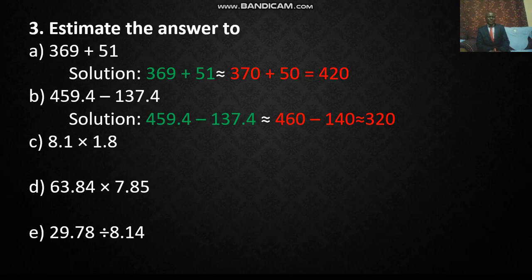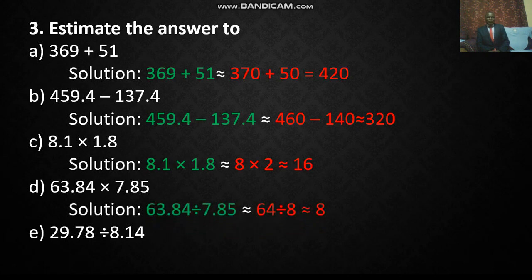Then we have 8.1. So in this case 8.1 becomes 8, 1.8 becomes 2. When you multiply you get approximately 16. Then the one that follows, we again approximate. That is, we estimate 63.84 becomes 64. Then 7.85 becomes 8. So we divide. The answer is 8.